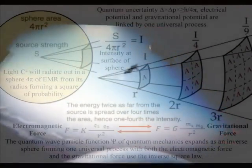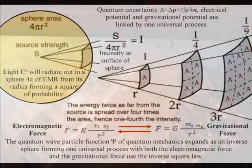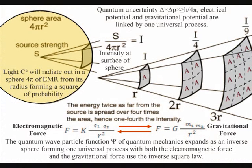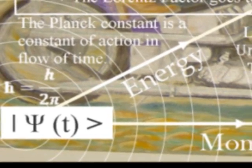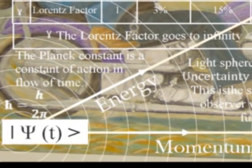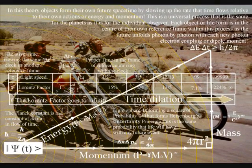We have the inverse square law because the surface area of the light sphere increases with the square of the radius. Thus the strength of the gravitational field is inversely proportional to the square of the distance from the source. There is no mysterious action at a distance. The gravitational field will work at the speed of light because it is an integral part of one universal process with the electromagnetic force. We have one universal process that begins with the quantum wave particle function expanding out as an inverse sphere and ends with the inverse square law of gravity and Newton's third law of motion: to every action there is an equal and opposite reaction. Gravity is the opposite reaction to atoms radiating quantized spherical wave fronts of electromagnetic radiation.